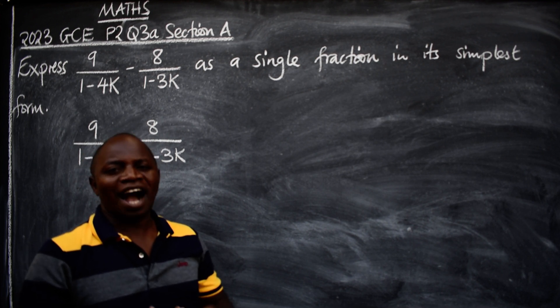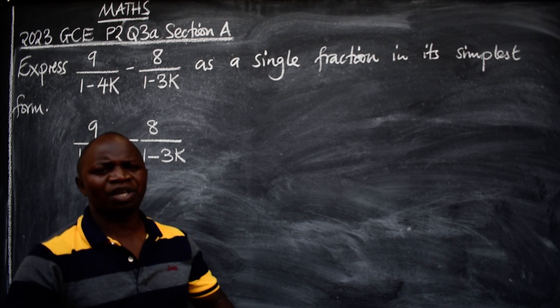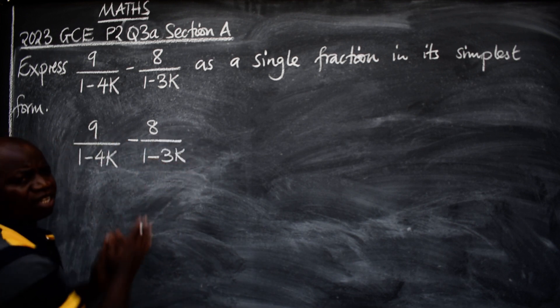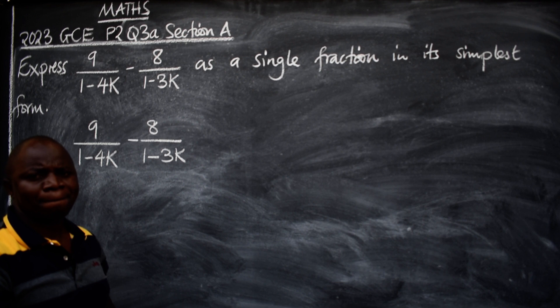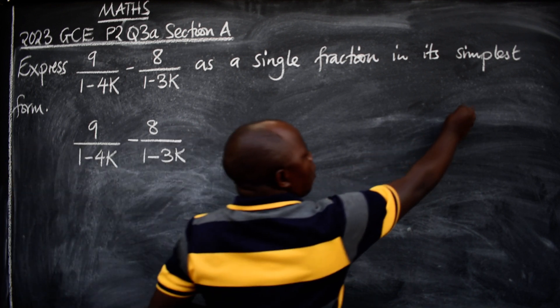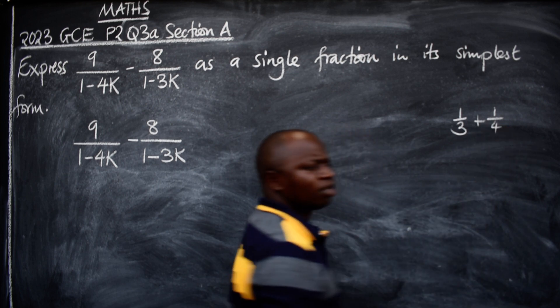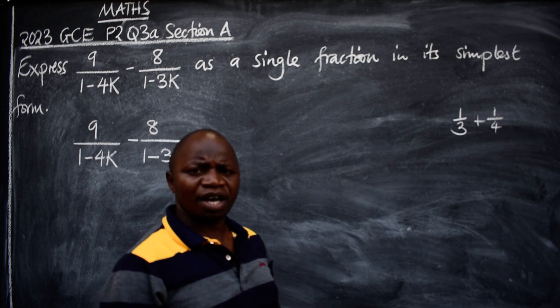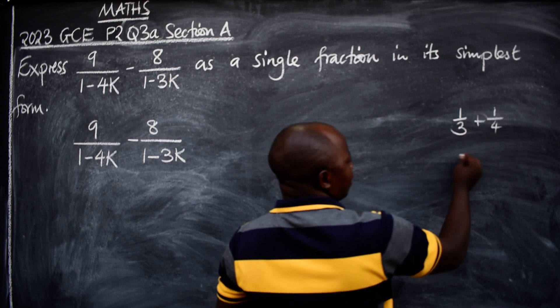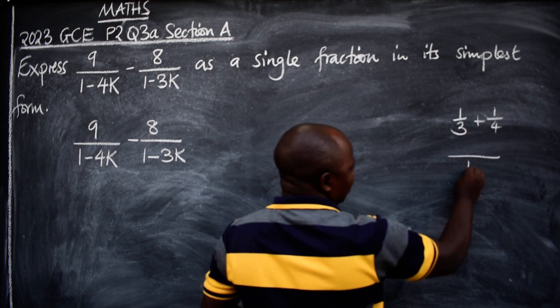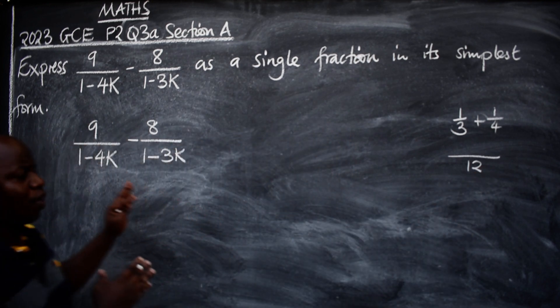How do we add fractions? How do we subtract fractions? That's the concept that you need to apply here. If I have 1 over 3 plus 1 over 4, how do we get the answer to that? Even if it has got a minus here, we always say common denominator. In this case, 12.